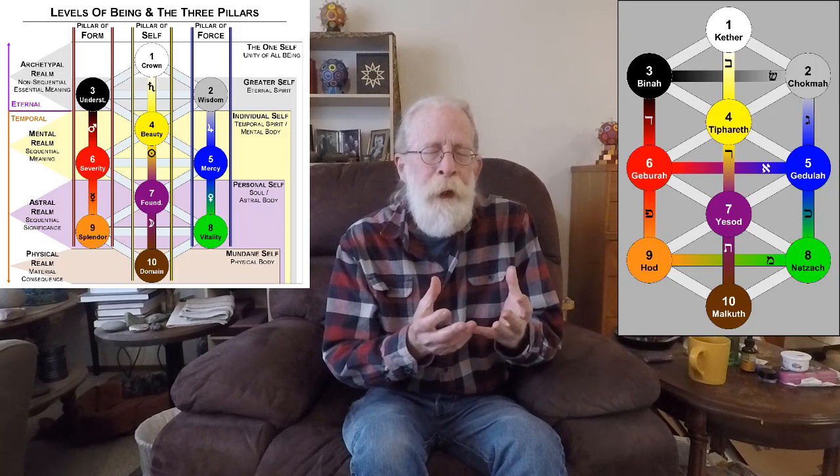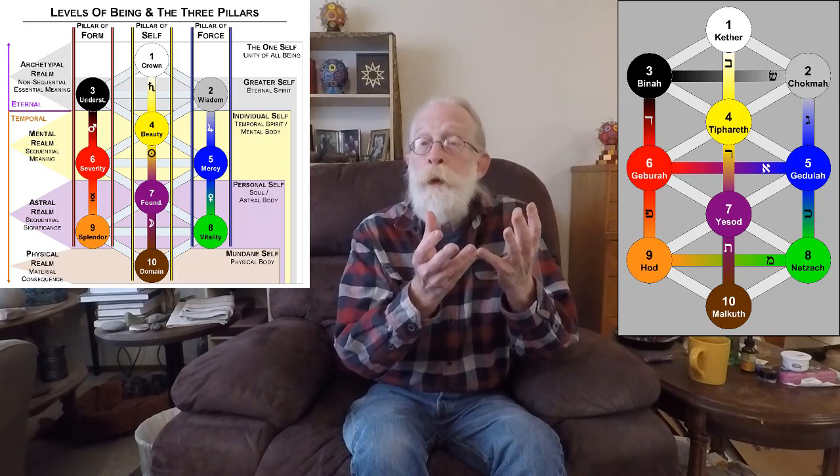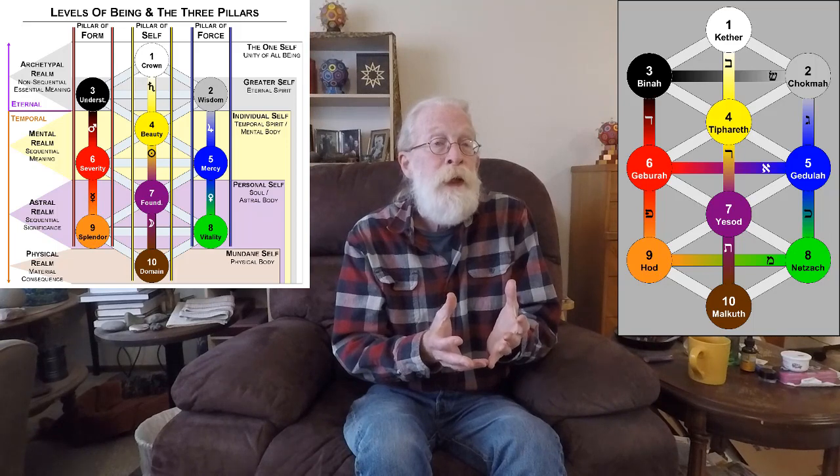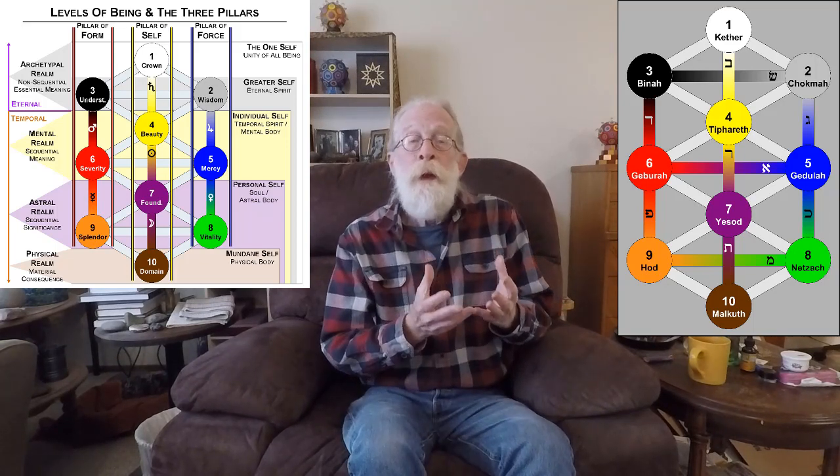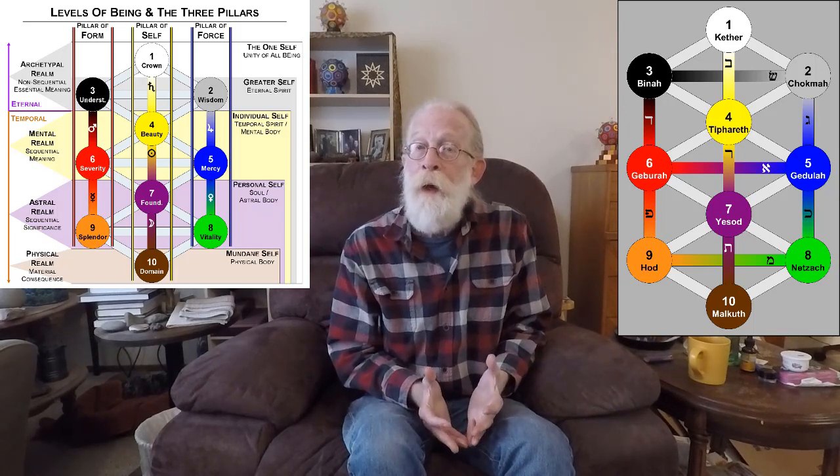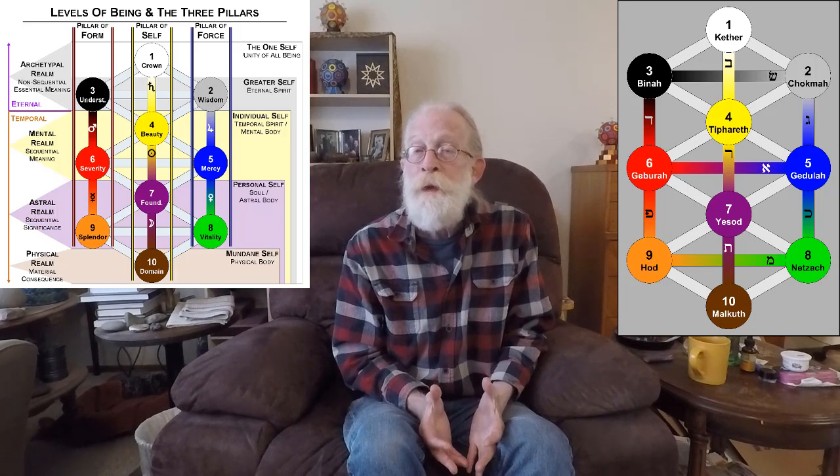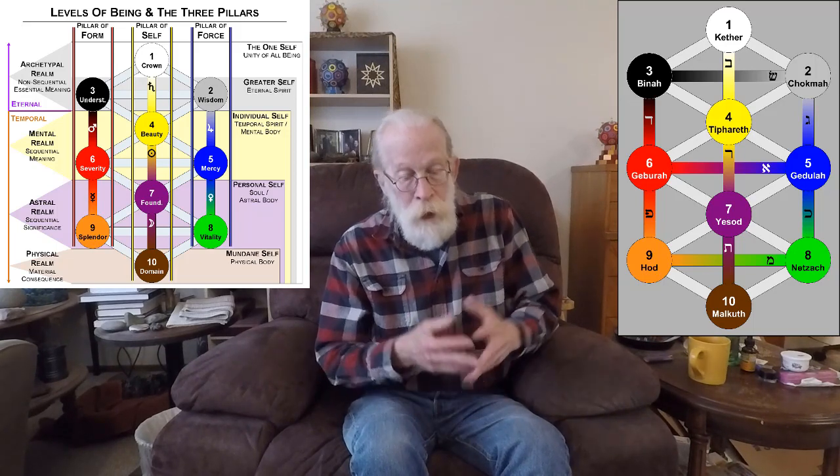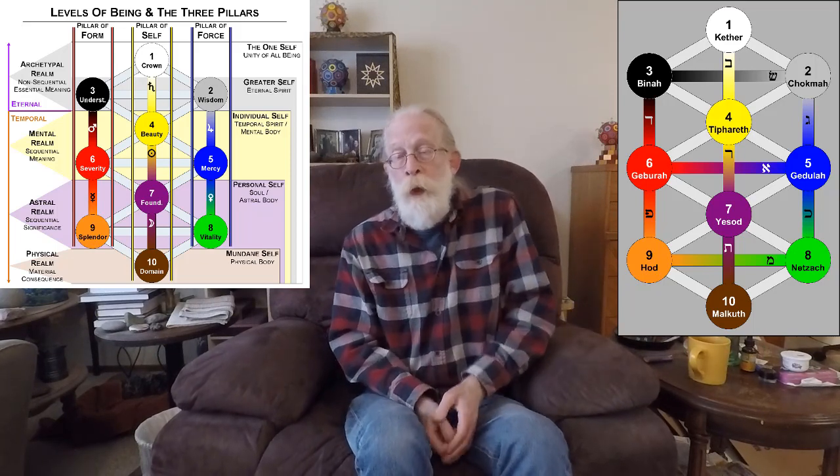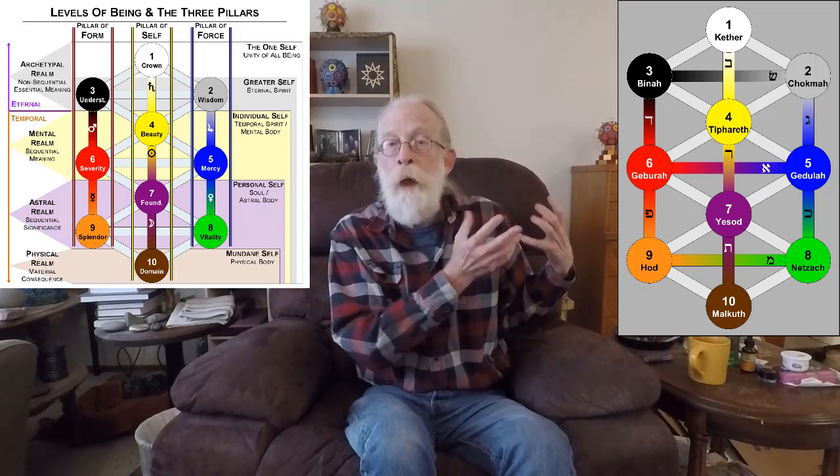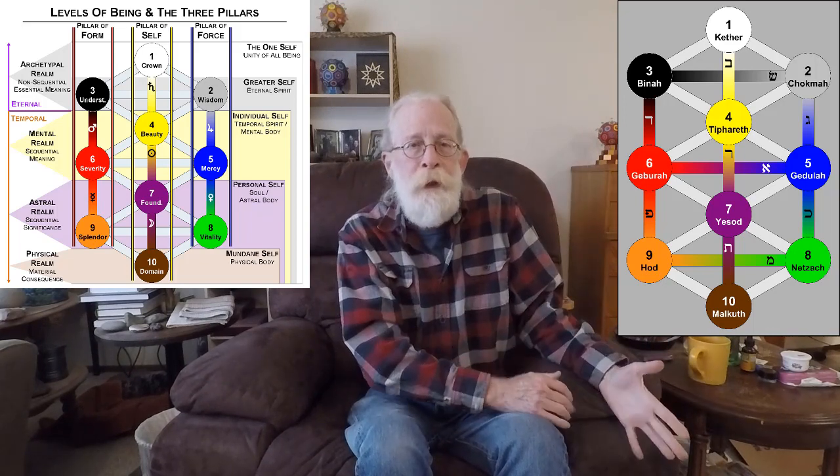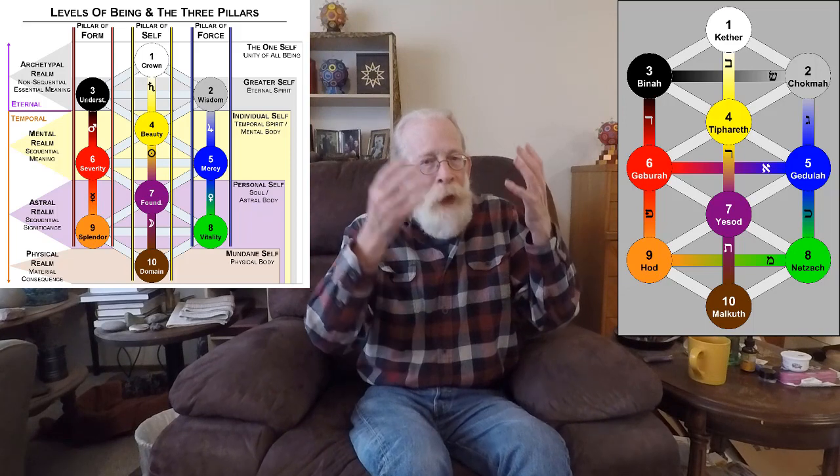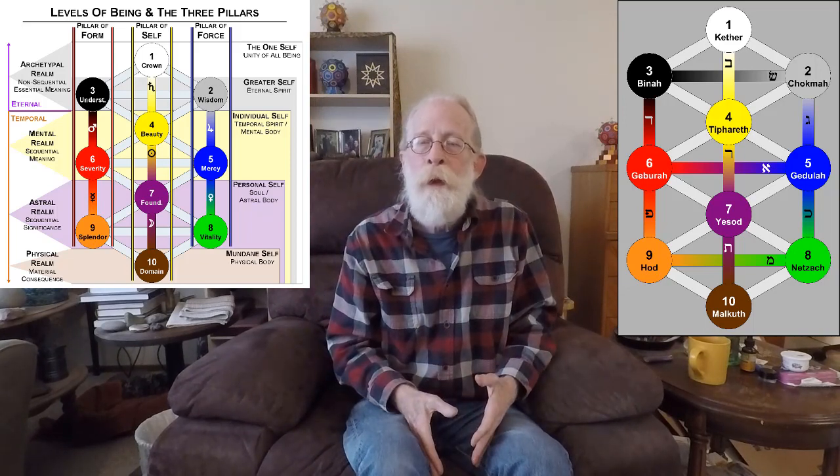So the path of Beth and Saturn is the descent from the supernal realm to the mental realm. The path of Resh and the sun is the descent from the mental realm to the astral realm. And the path of Tav and the moon is the descent from the astral realm into the physical, the material realm. Now, the pillar of mercy.